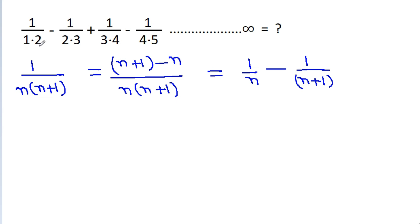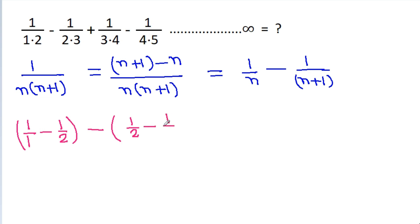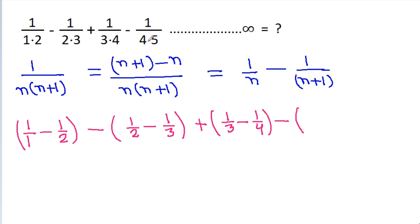So, 1/(1·2) = 1/1 - 1/2, minus 1/(2·3) = 1/2 - 1/3, plus 1/(3·4) = 1/3 - 1/4, minus 1/(4·5) = 1/4 - 1/5, up to infinity.